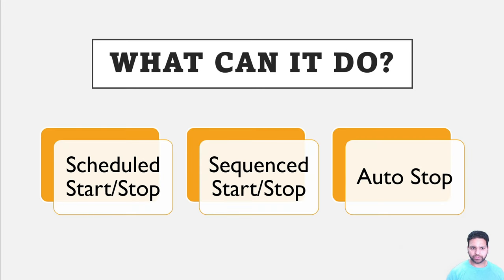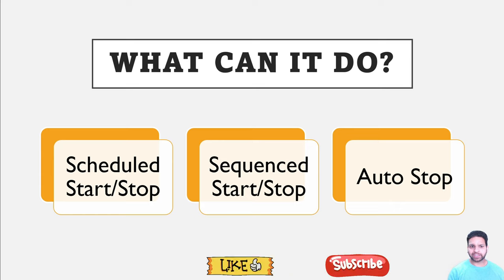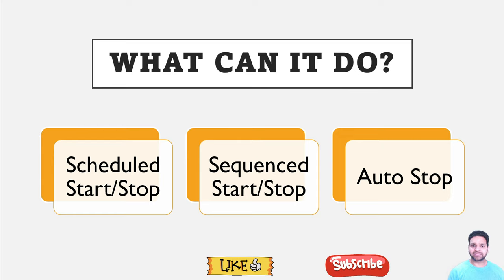What can this solution do? As the name suggests, it can stop and start the virtual machines. The first one is Scheduled Stop Start, where based on different schedules and timers you can start or stop the virtual machines. Scheduled Stop Start was available in the previous version also using Azure Automation account, so why has Microsoft recommended version v2? The reason is the Sequence Stop Start.